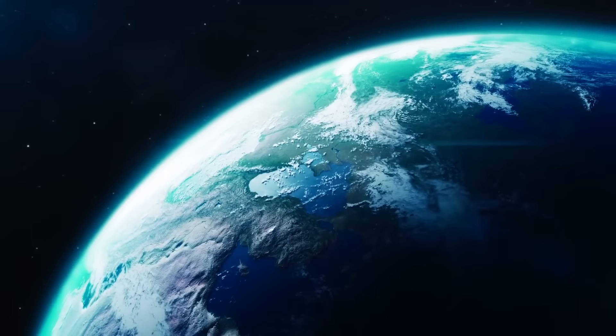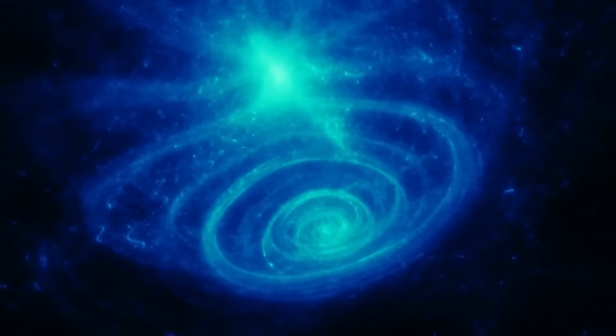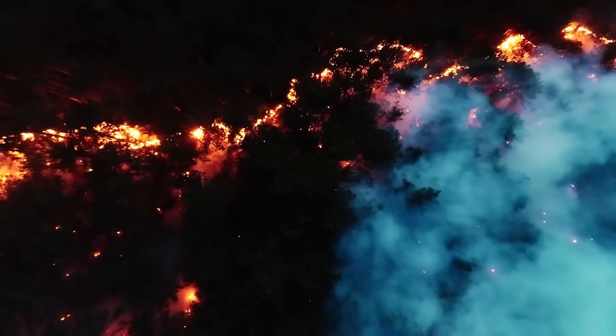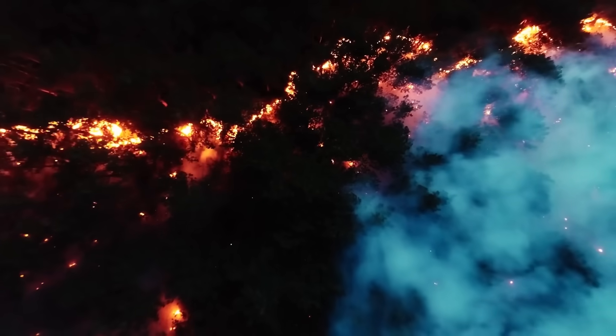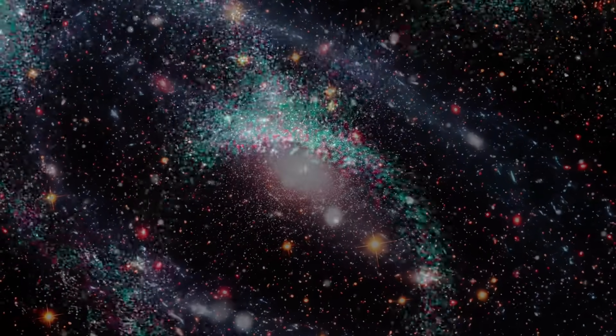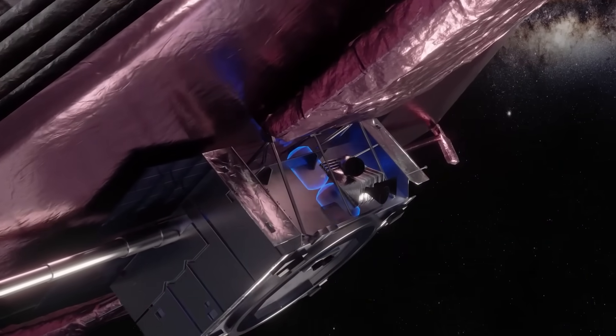More frightening than what it resembled was where it was located. The coordinates matched a cold spot in the cosmic microwave background, an area long thought to be a statistical anomaly, devoid of galaxies and stars. But now, it looked more like a lock, a vault, a geometric construct encoded into the fabric of the universe itself. And if it's a vault, what's inside it?